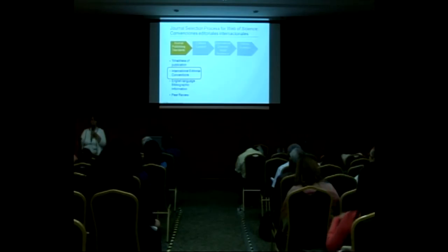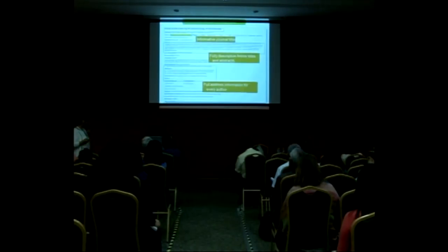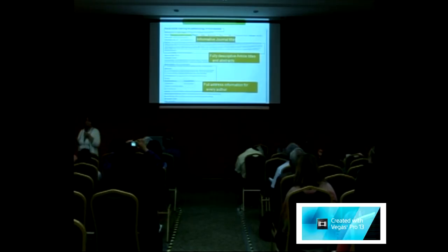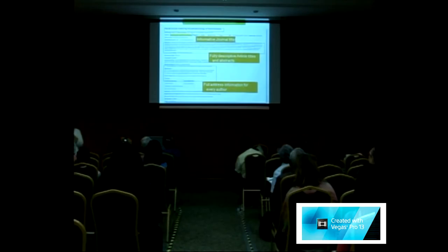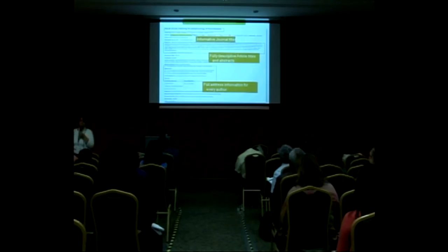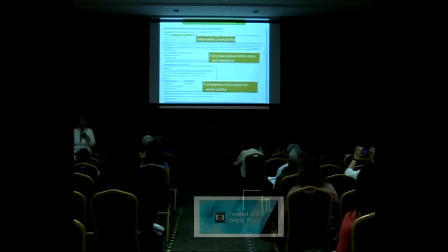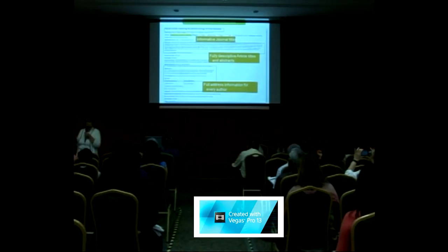The journal has to meet basic international editorial conventions. Since we gather over 18 items for every record in an authority file for a citation, the minimum requirements for international bibliographic conventions include: the journal should have an informative title. Nowadays a lot of journals that pop up on the internet are called 'International Journal of Science' — what does that mean? Nothing. Tell me what kind of journal this is. It needs fully descriptive article titles and abstracts, with the exception of humanities, where metaphorical titles are acceptable.